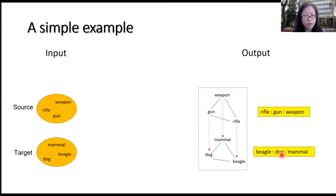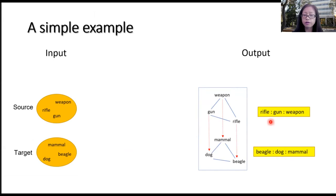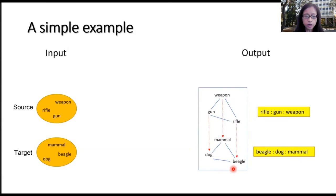Let me start with a simple example. We take unstructured input — basically three words as source and three words as target — and then the output of this analogy model through analogy processing discovers relationships between words in the source and target. We can see that rifle→gun→weapon is analogous to beagle→dog→mammal. In this talk I'll use this graphic representation — different nodes indicate individual concepts, edges indicate relations between concepts, and red arrows indicate the final mapping result.